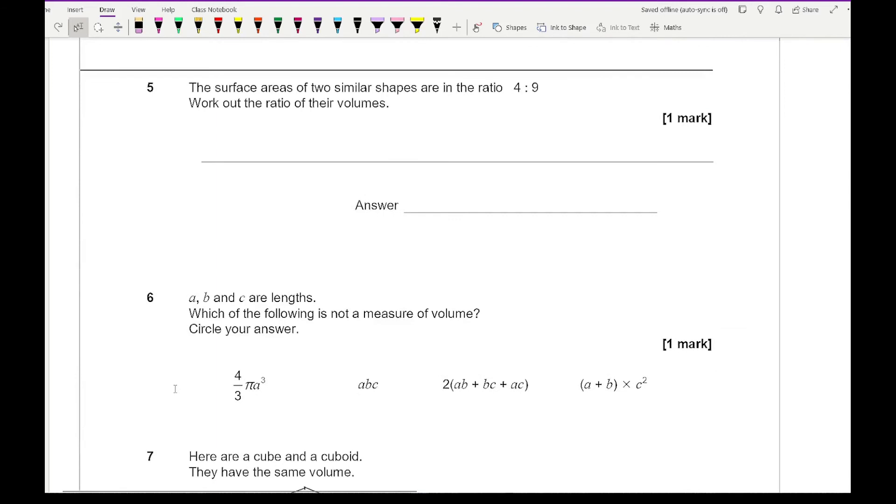Looking at question 5, it says the surface area of two similar shapes are in the ratio of 4 to 9. Work out the ratio of their volumes. So again here, what we've got is that the area scale factor is going to be 4 over 9 or 9 over 4. So therefore then the length scale factor will be the square root of those, which is going to be 3 over 2. And then the volume scale factor is going to be that cubed, the length cubed, so it's going to be 27 over 8. So what's the ratio going to be? 8 to 27.